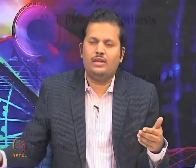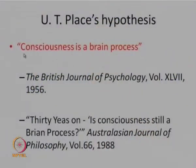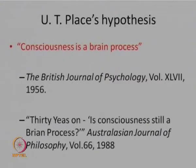Let us look at what U.T. Place's major concern is. Place is advocating a hypothesis: consciousness is a brain process. This hypothesis is one of the major breakthroughs in the discourse of philosophy of mind. Place's famous hypothesis was published in the British Journal of Psychology in 1956. Place holds on to his hypothesis and writes another paper published in the Australasian Journal of Philosophy in 1988, which corresponds to the previous one, titled '30 Years On: Is Consciousness Still a Brain Process?'